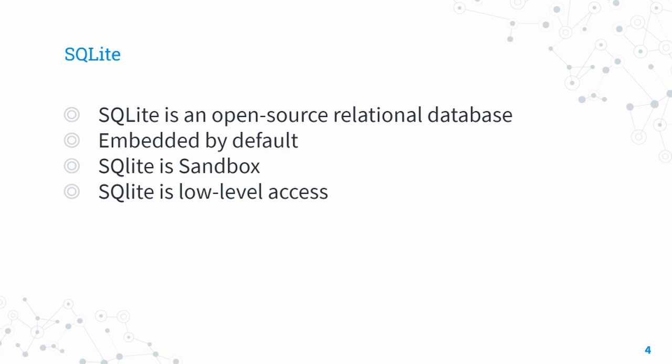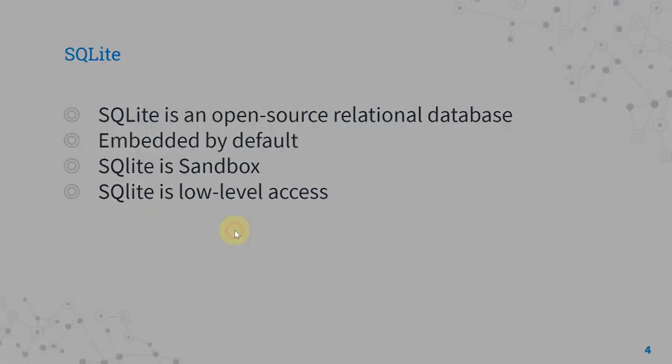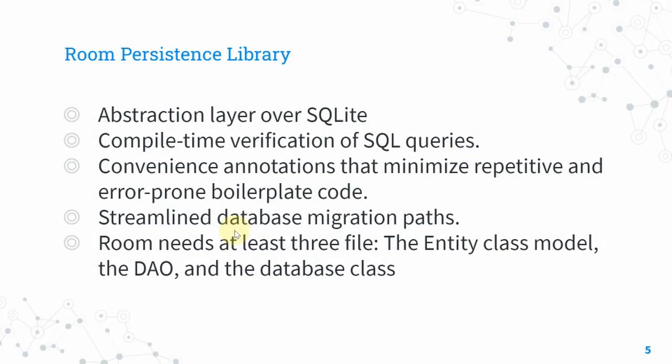The drawback of SQLite is low-level access — in order to create a simple query you have to write a lot of code. You may end up with a lot of files just to perform simple database operations, and that's where the Room Persistence Library comes in.